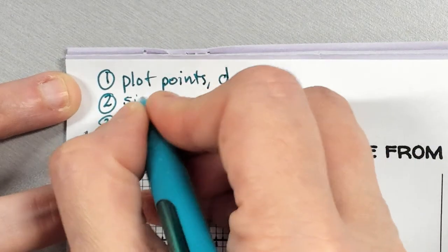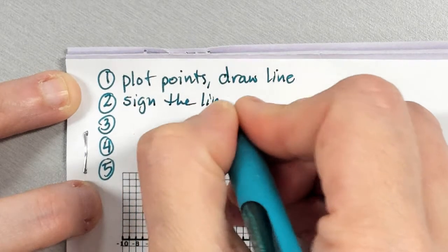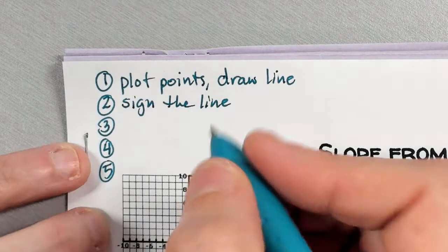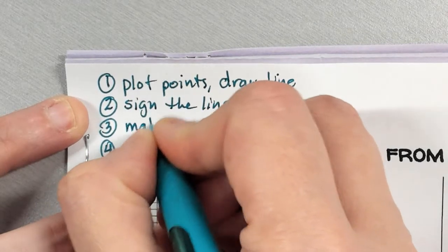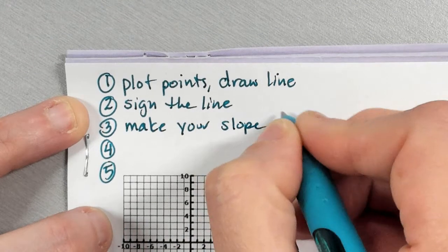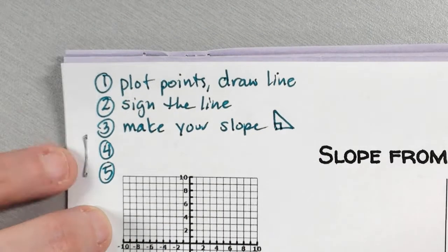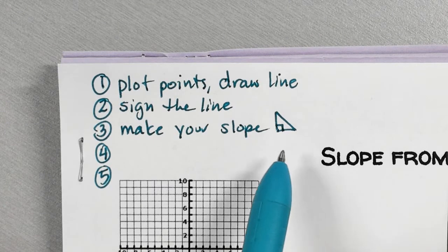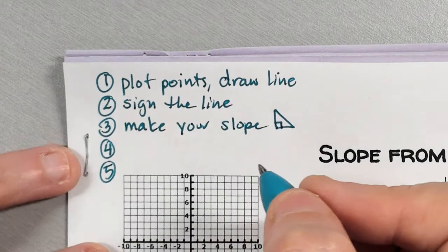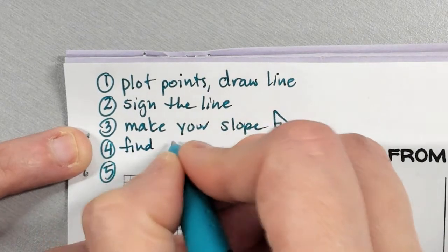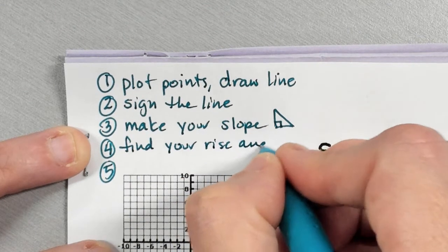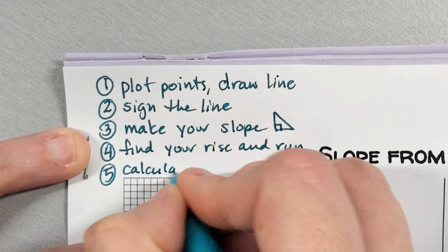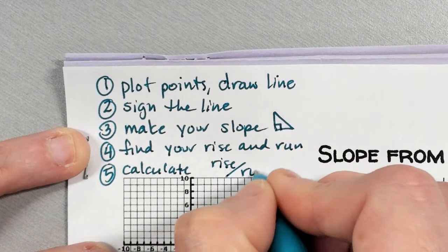Step two: sign the line. Step three: make your slope triangle — and I want that to look like a right triangle with a little thing in the corner, because we're making right triangles. Number four: find your rise and run. And number five: calculate rise over run.